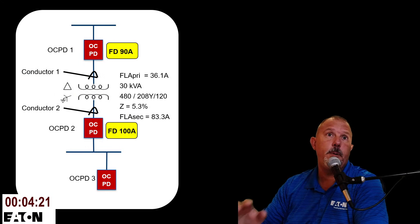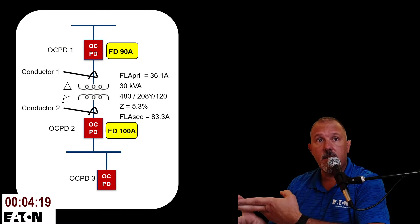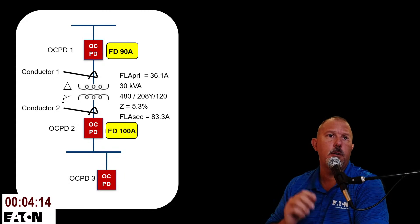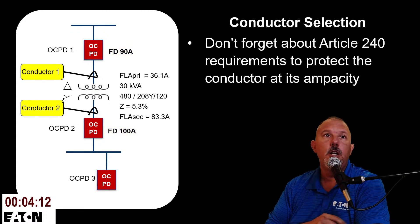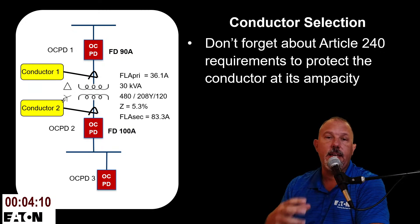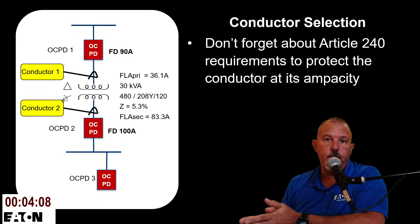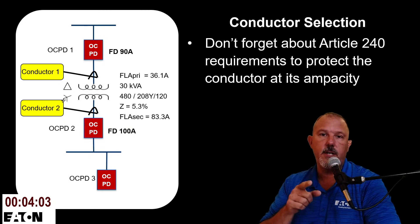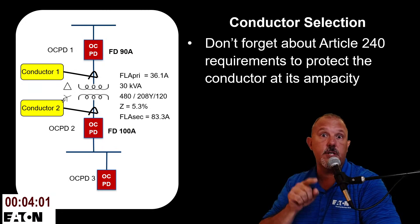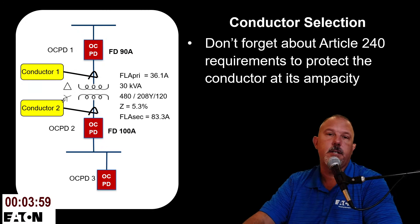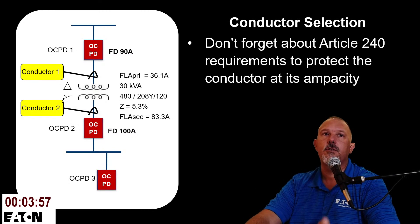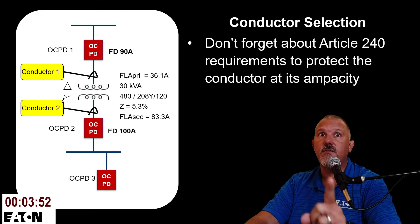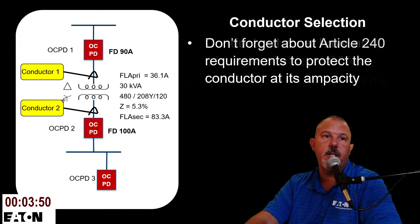We've selected primary and secondary circuit breakers and fuses. Now we size the conductors. Article 240 governs overcurrent protection for conductors — and there's a special section for transformer secondary conductors, which are neither feeders, service conductors, nor branch circuits. They are transformer secondary conductors governed specifically within Article 240.